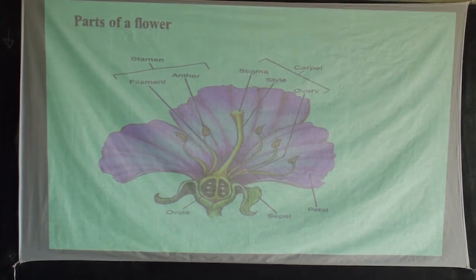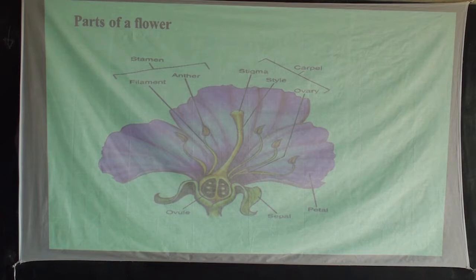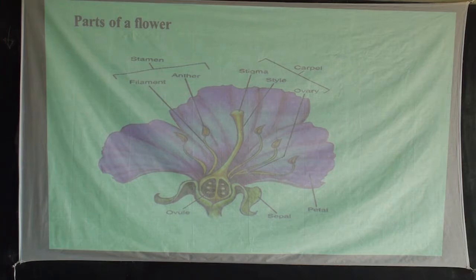The external parts include the petal, the sepals, the stalk — those are parts which are external. Then the internal parts include the male cell — the male part of a flower — and the female part of a flower, which we shall go through.